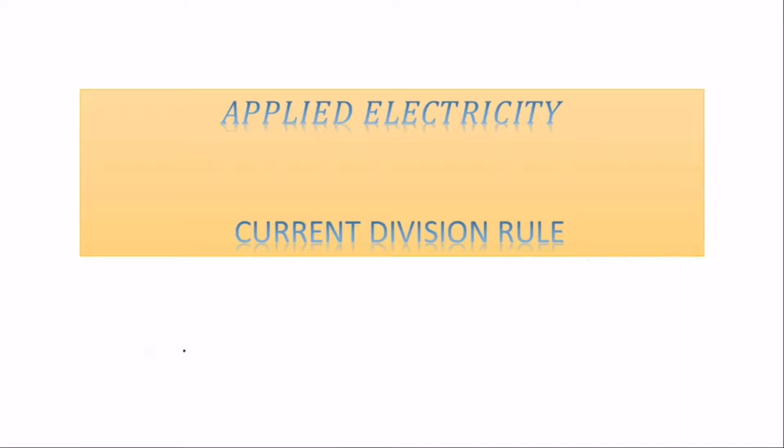Today we cover the current division rule. Current division is applied to share current between parallel branches. We talk about resistances being in parallel because they have different currents flowing through them.